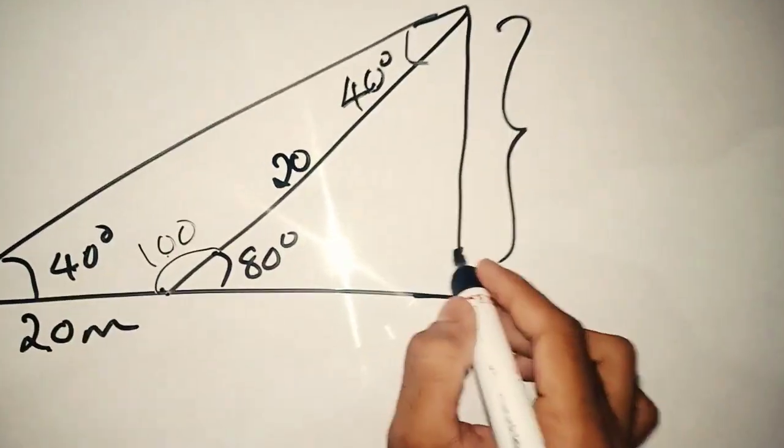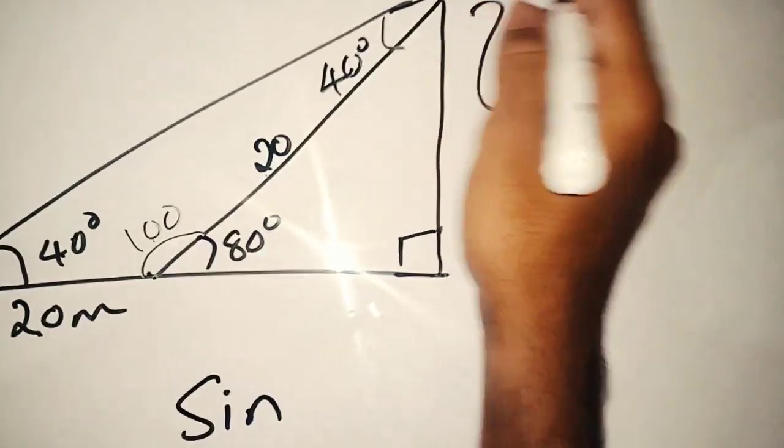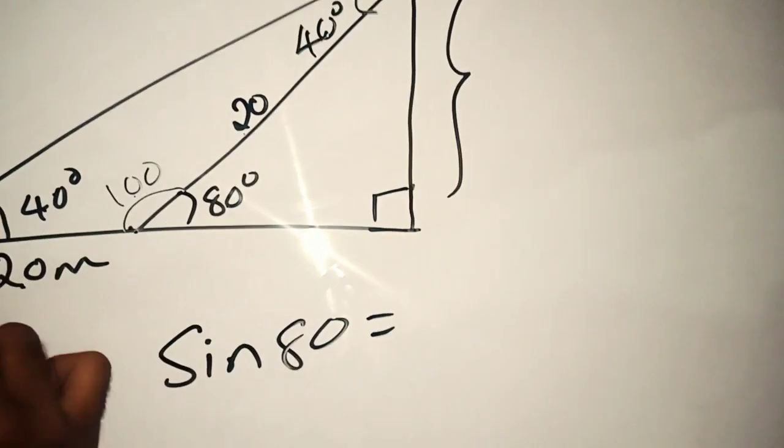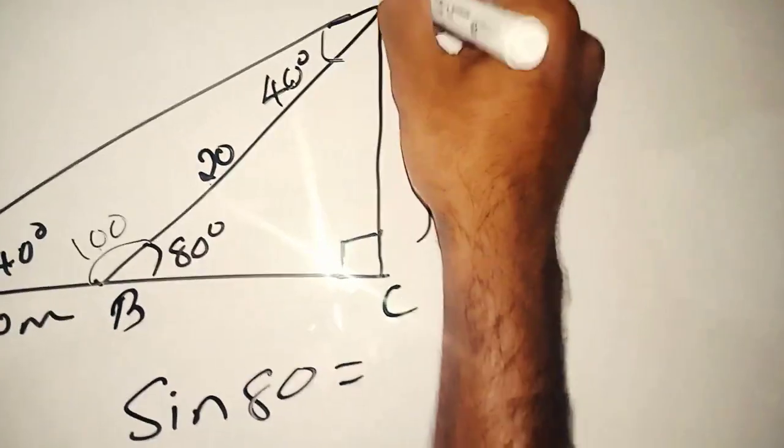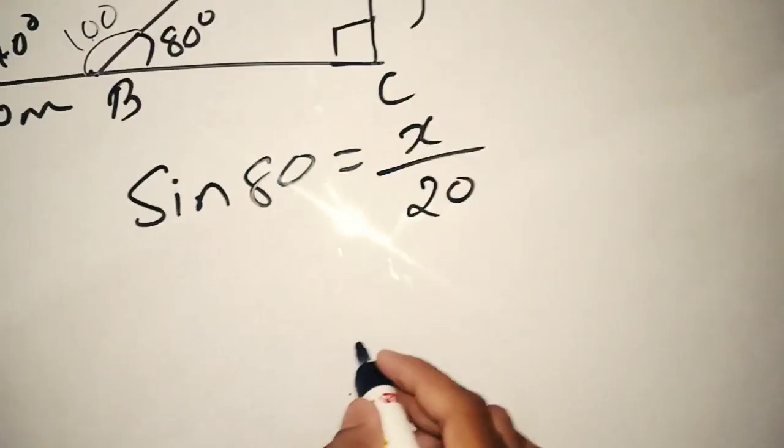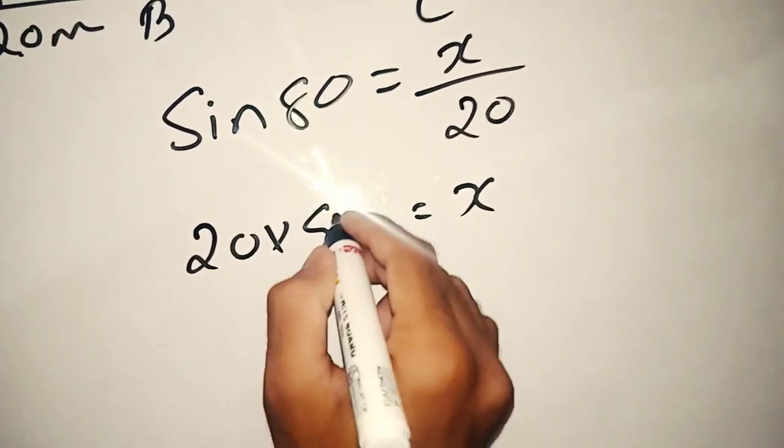You have to find it. How do we use the sine function? We write sin 50. Sin 50 equals x over 20. So x is equal to 20 times sin 80.